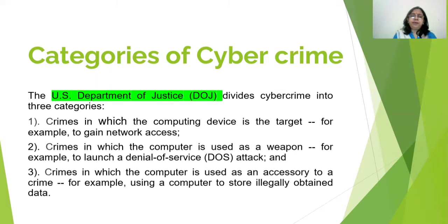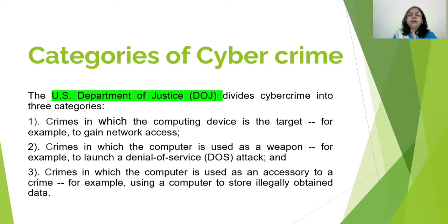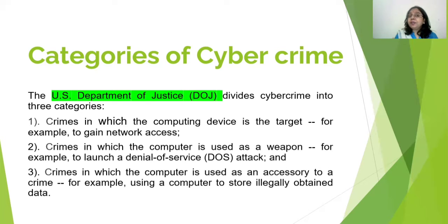Now, categories of cybercrime. The U.S. Department of Justice (DOJ) divides cybercrime into three categories. First, crimes in which the computing device — your laptop, computer, or desktop — is the target; for example, to gain network access. Second, crimes in which the computer is used as a weapon; for example, to launch a denial of service (DoS) attack. Third, crimes in which the computer is used as an accessory to a crime; for example, using a computer to store illegally obtained data.